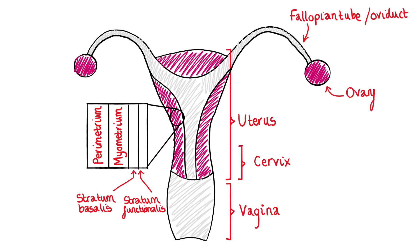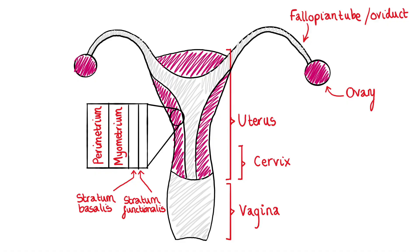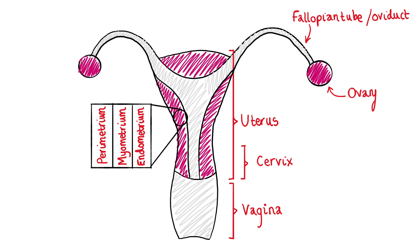Adding more detail to the endometrium — that innermost layer — it can be divided into two layers. We have the stratum basalis, which is adjacent to the myometrium, and then we have the stratum functionalis, which is the layer of the endometrium that will thicken and then shed during your period. That is the layer undergoing the changes during the menstrual cycle. On the diagram you can also see the ovaries — apparently the size of almonds, which is smaller than I thought — and the fallopian tubes, also known as oviducts.